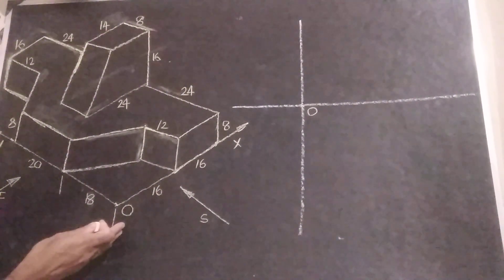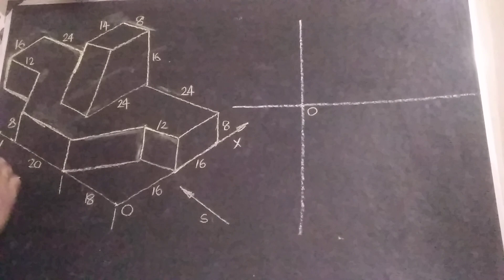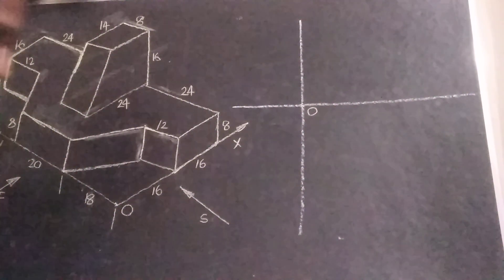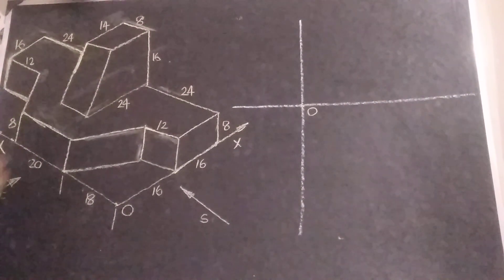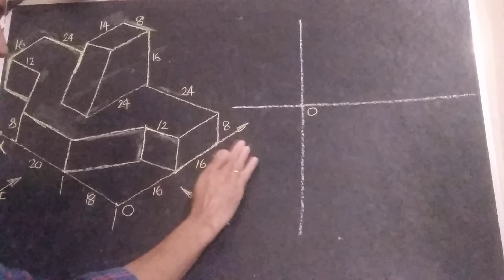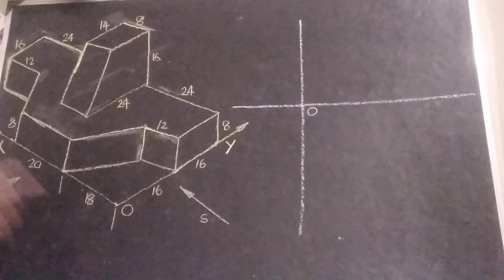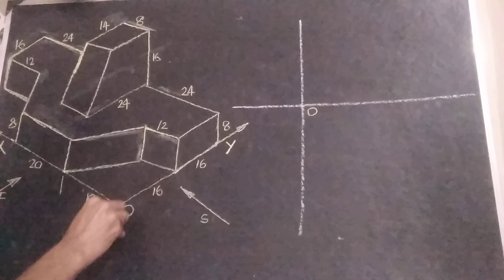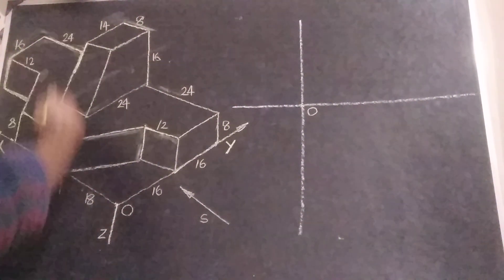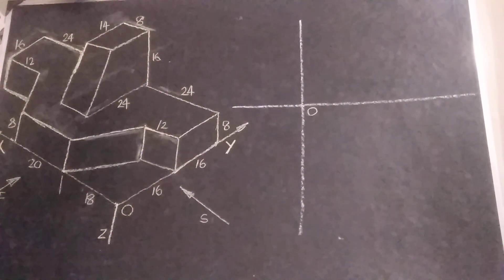In front view, the total distance along this axis — we can treat this as the x-axis and this as the y-axis. The z-axis is here, and the x-z plane will become the front view.